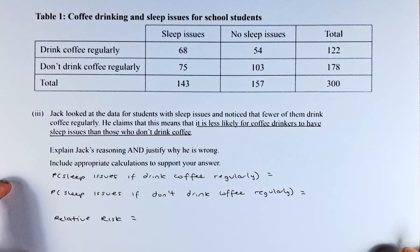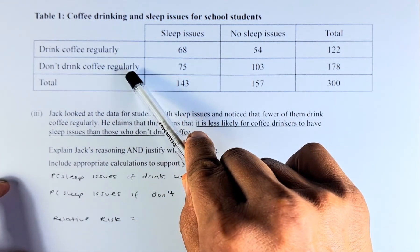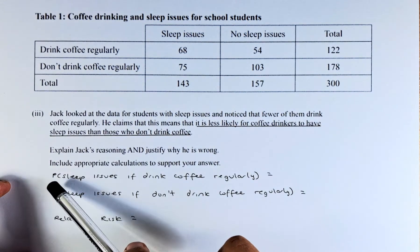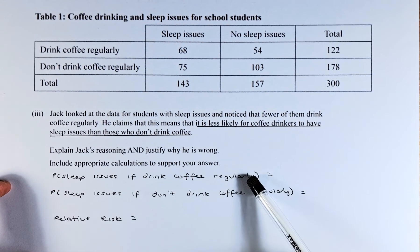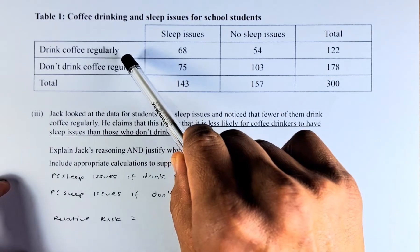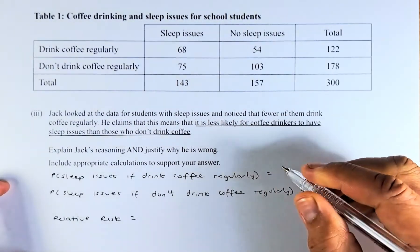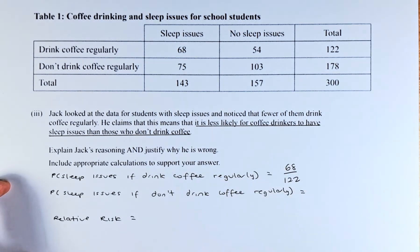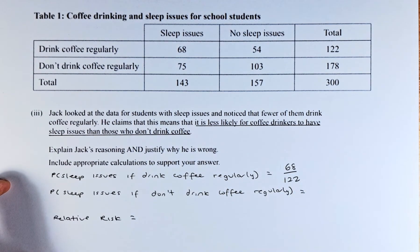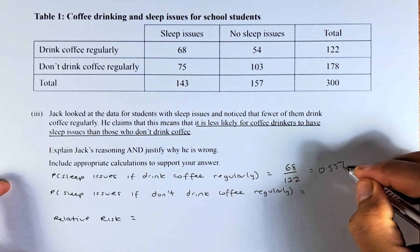Include appropriate calculations to support your answer. We compare the probability of having sleep issues for those who drink coffee regularly versus those who don't. For those who drink coffee regularly, there are 122 total. If they have sleep issues, the probability is 68 out of 122, which in decimal is 0.5574.